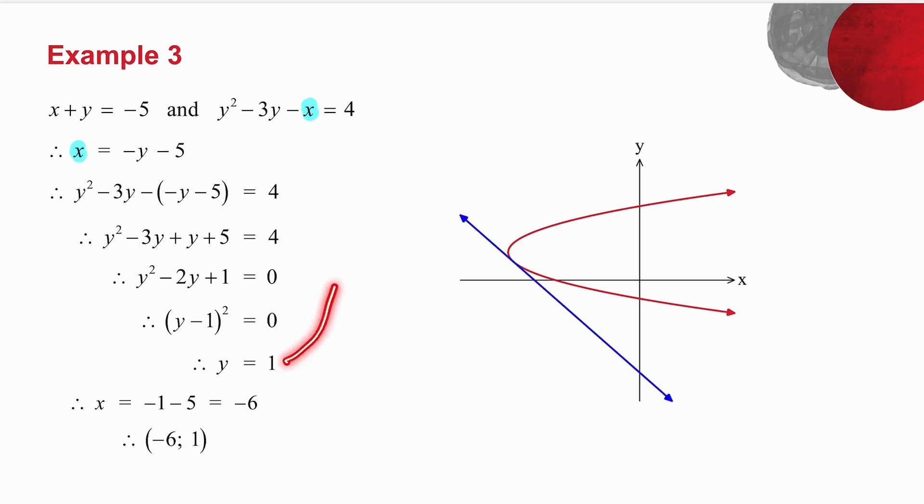I then take my value of y, substitute it back in, and I get my value of x. So my solution is x equals minus 6, y equals 1. Now what does it tell you if you've only got one solution? Well,